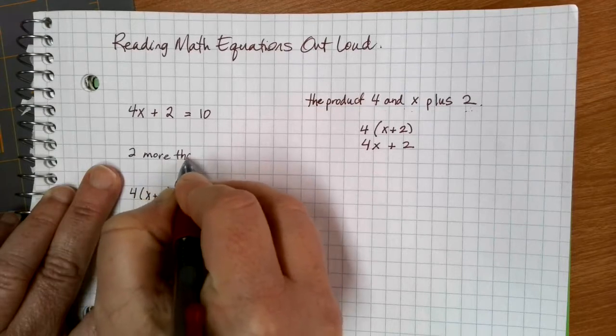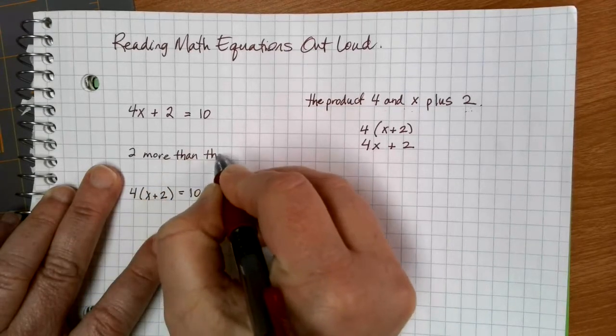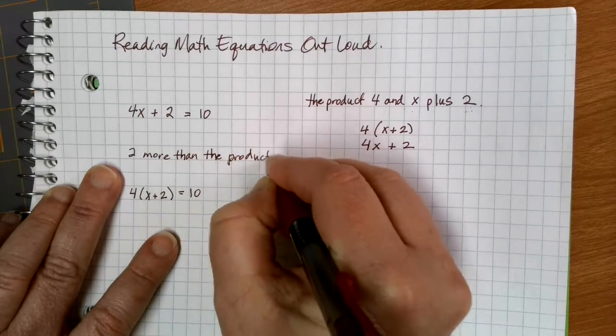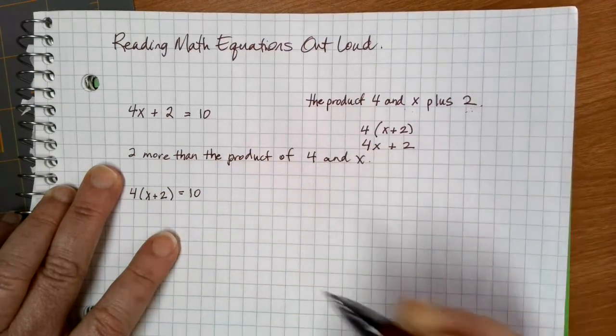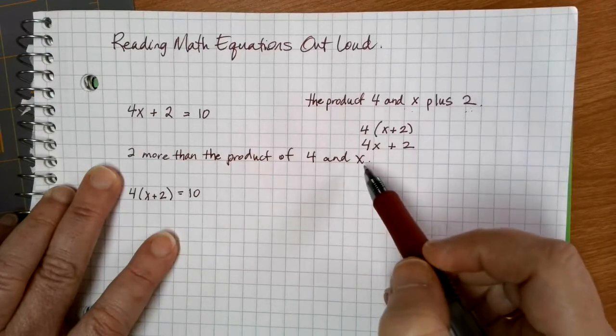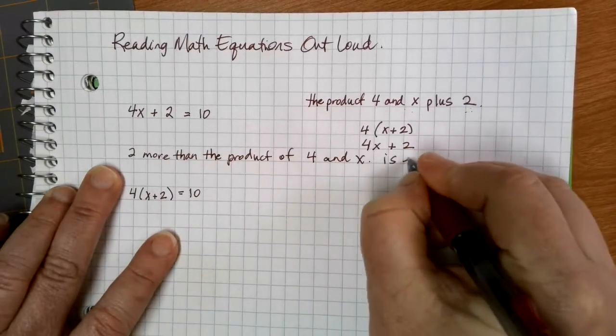the product of 4 and x. This is one way that's going to be immensely more clear and then we're going to say is equal to 10.